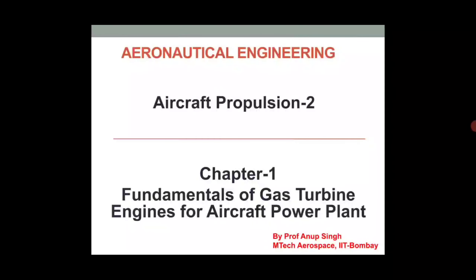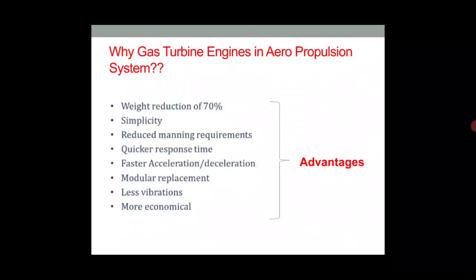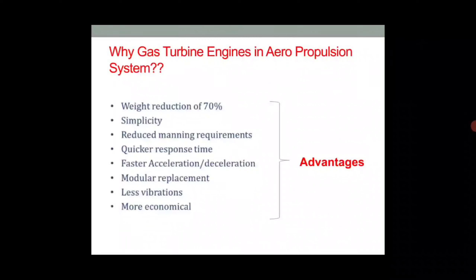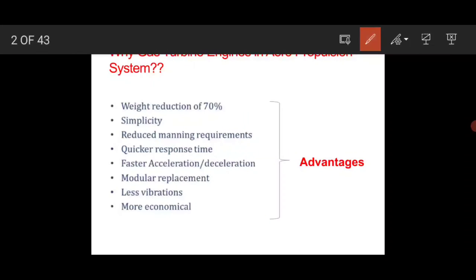Let's start chapter one: Fundamentals of Gas Turbine Engines. First, let's understand why we are learning about gas turbine engines and why we don't use positive displacement engines — that is, reciprocating or piston engines. The first advantage is a seventy percent weight reduction compared to positive displacement engines. This is a typical value you can find in textbooks.